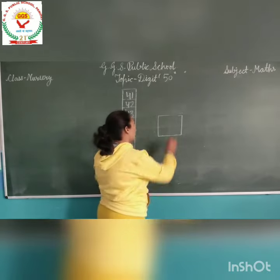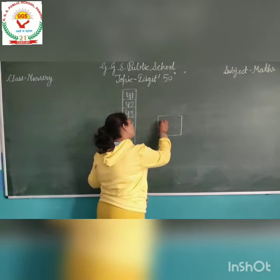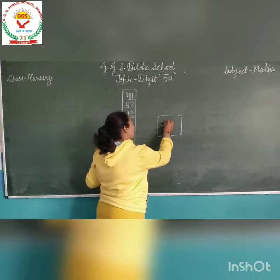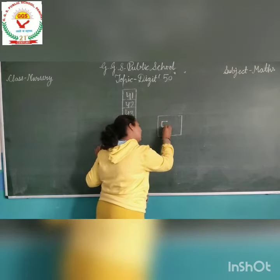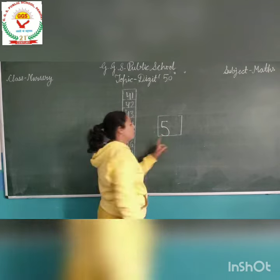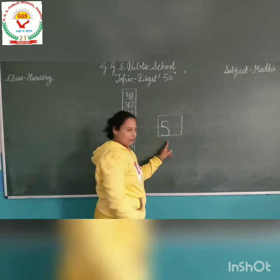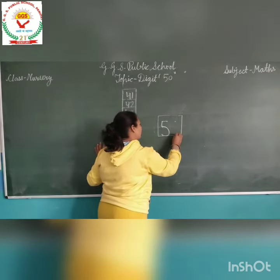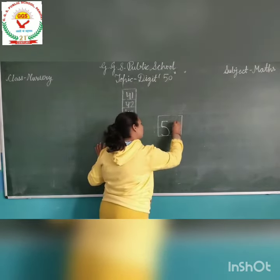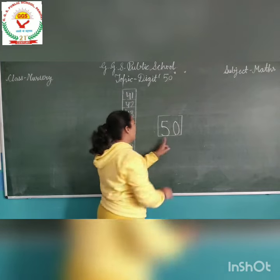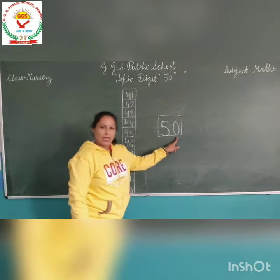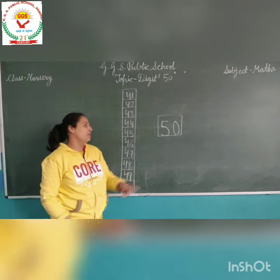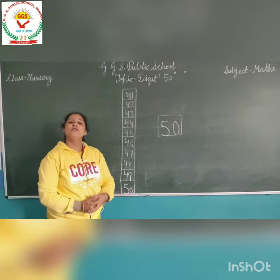Firstly we put a dot, 1, 2, 3. Slipping line, standing line, then count: 5, 0. 5, 0. And today we practice digit 50, 50.